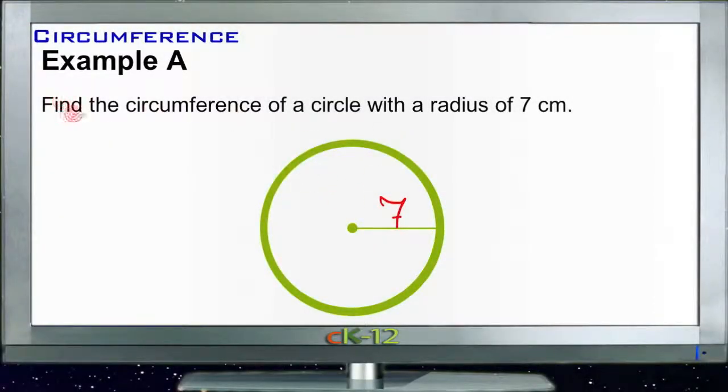Alright, so example A asks us to find the circumference of a circle that has a radius of 7 centimeters. Now we didn't sketch one in here. If the radius, which is the distance from the center to the outside of the circle, is 7 centimeters, then the diameter is twice that, or 14 centimeters.